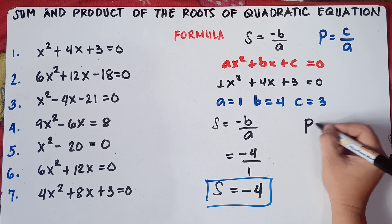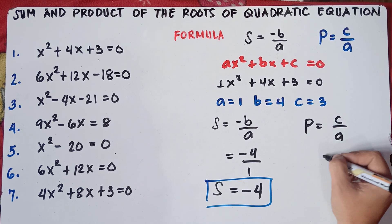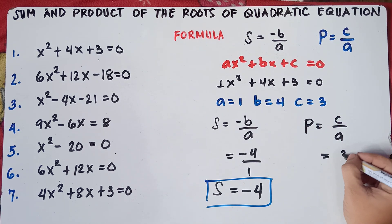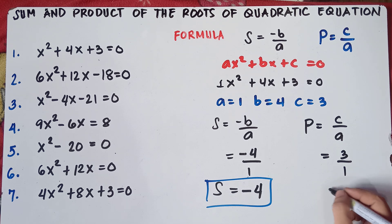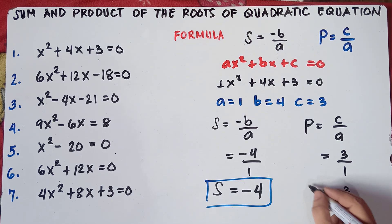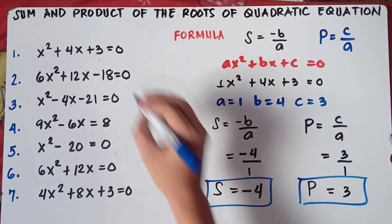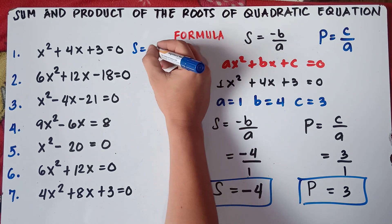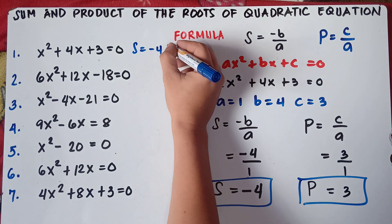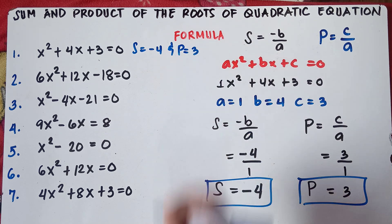For the product, that would be C over A. Our C is 3 and our A is 1. So 3 divided by 1 is 3. That would be our product. So for number 1, the sum is negative 4 and the product is positive 3.